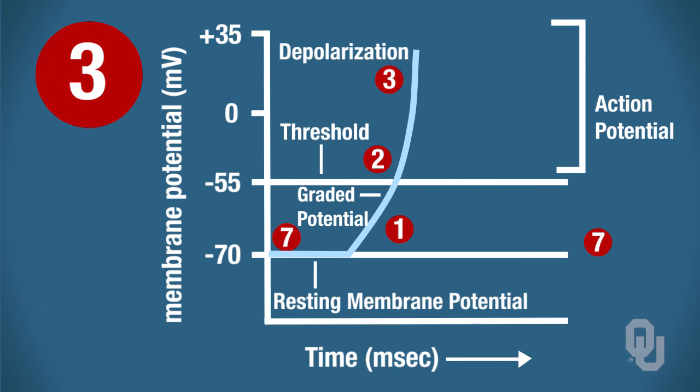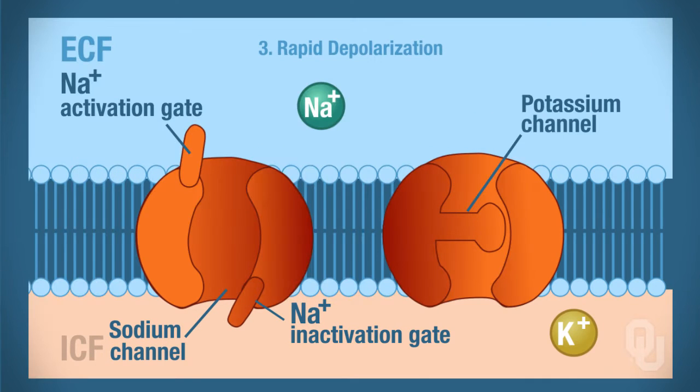In rapid depolarization, this is number three. The membrane potential is going to be changing from negative 55 millivolts toward positive 30 millivolts. But we want to know why — in physiology we always ask why. We want to look at how the membrane potential becomes more positive, and that deals with the configuration of your voltage-gated ion channels.